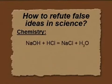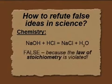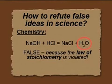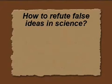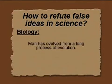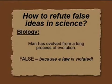Another example from chemistry: you see a reaction equation that is also false because the law of stoichiometry is violated. You see in the equation H3O, but the right equation must be H2O. Now an example from biology: man has evolved from a long process of evolution — false, because a law is violated. But the question is, do we have such a law? We will find out laws of nature which can give us the right answer. That is what I want to show you in this session.